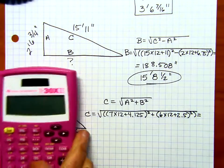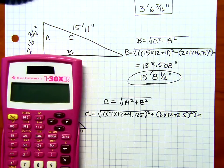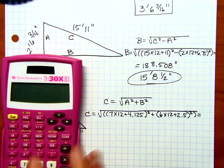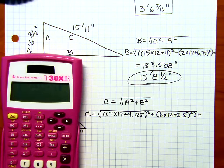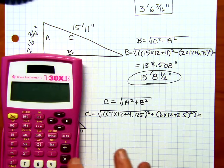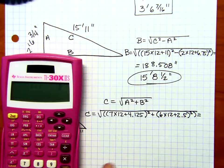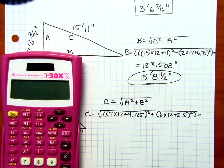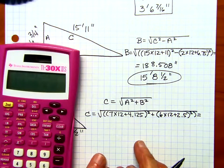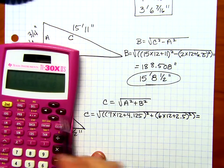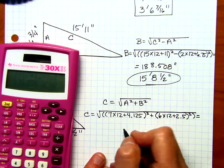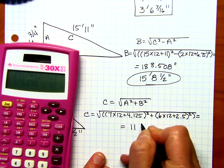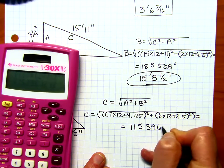All right. Last time we used the calculator. Let's get that. We're almost done. And I get 115.3961, so that's going to be 0.396. So, 115.396 inches.